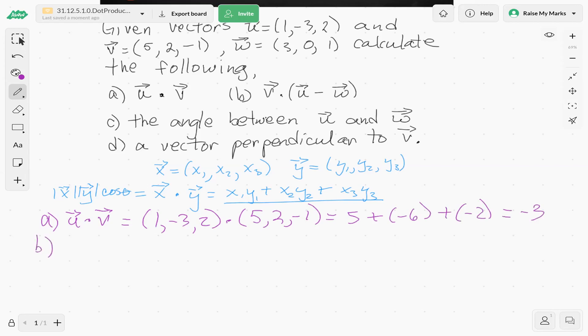B. We have v dot (u minus w). Okay, a few ways we can do this. We can do v dot u minus v dot w, using some of the properties of dot product, or we can just figure out what u minus w is, and then take the dot product of that result with v. So why don't we do that?